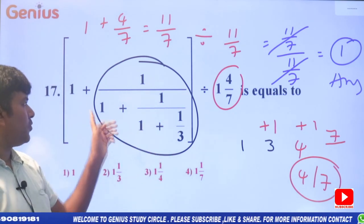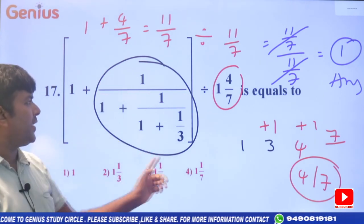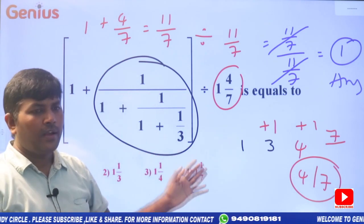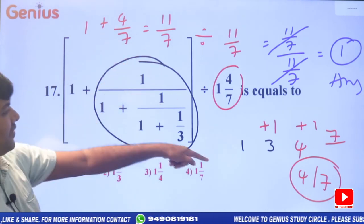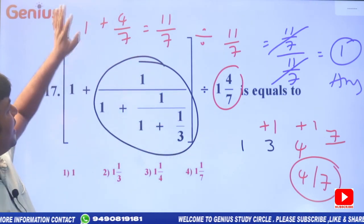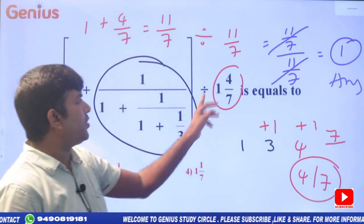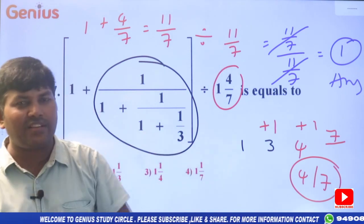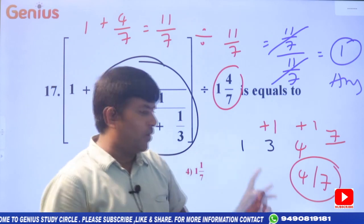First time working this trick: the inner fraction is 4/7, then 1 + 4/7 = 11/7. Even the answer equals 11/7. Then 11/7 divided by 11/7 — so the answer is 1 only.